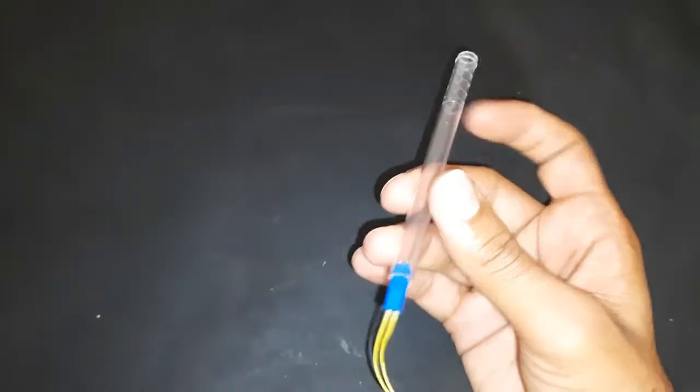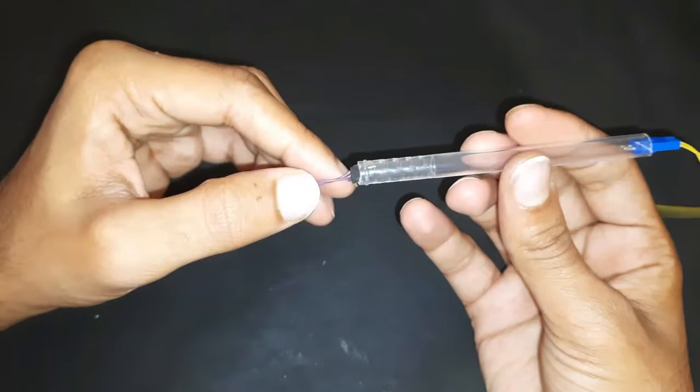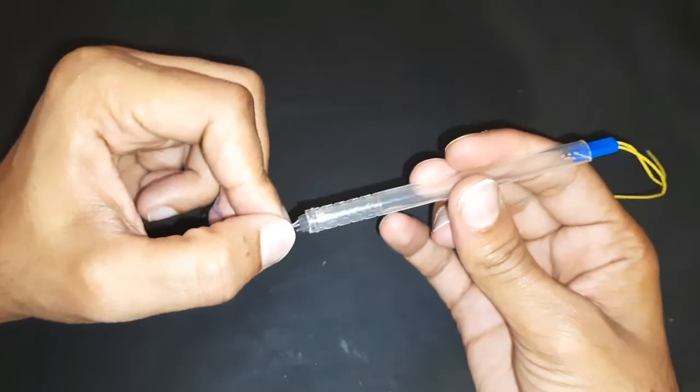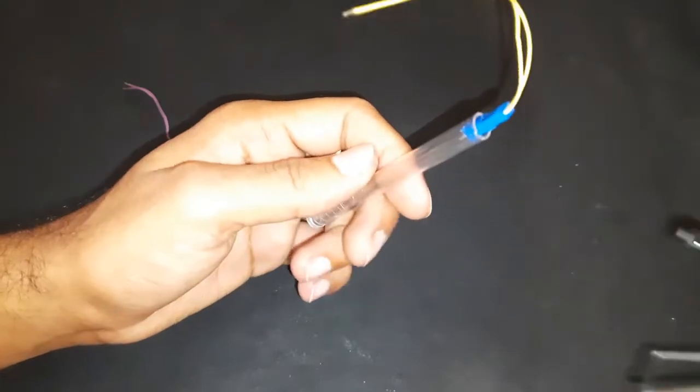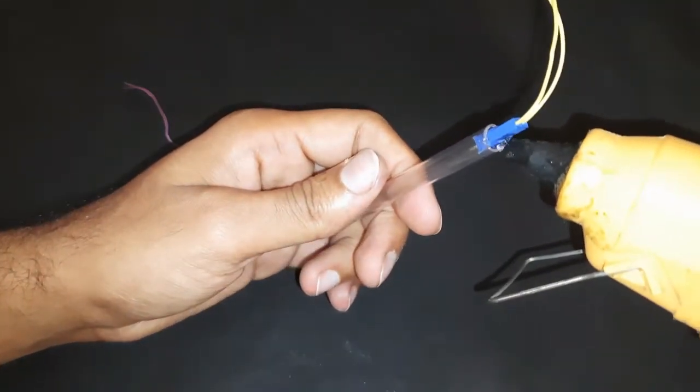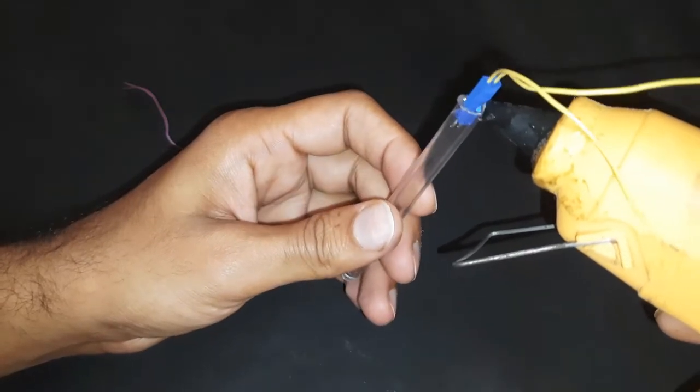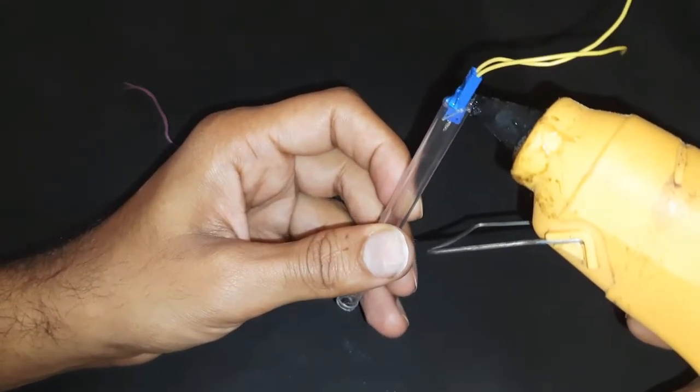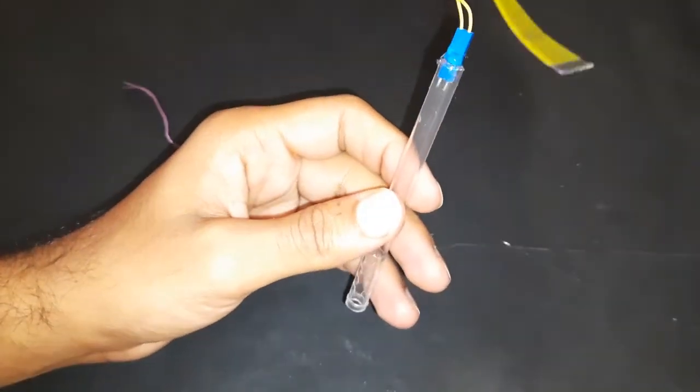These two pins will be shorted when the mercury touches it. The same two pins will be at the opposite side, but before that I will glue the one end. It must be airtight so that the mercury doesn't escape.